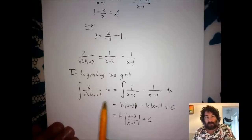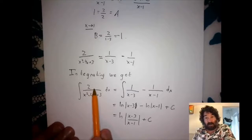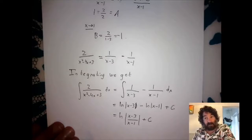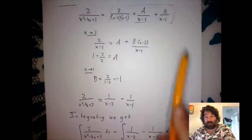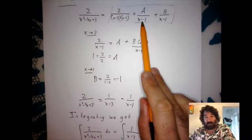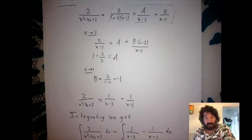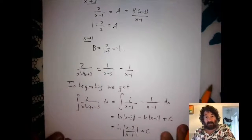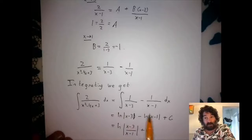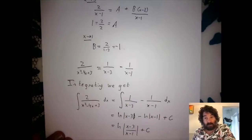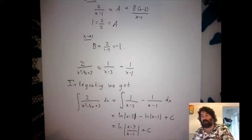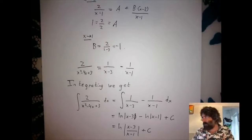To summarize the technique: first simplify so the degree of the numerator is less than the degree of the denominator, then factor the denominator and write an expansion with constants divided by each factor. Once done, integrate each term separately. This is one example of applying partial fractions.